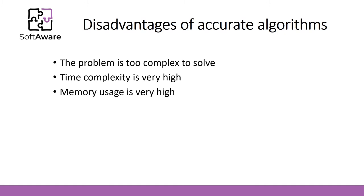Heuristic algorithms are designed to solve problems in a faster and more efficient way than traditional methods, by sacrificing optimality, accuracy, precision, or completeness for speed. There are many problems that are very hard to solve exactly — these are called NP-complete problems. In graph theory, most of the algorithms are like that.